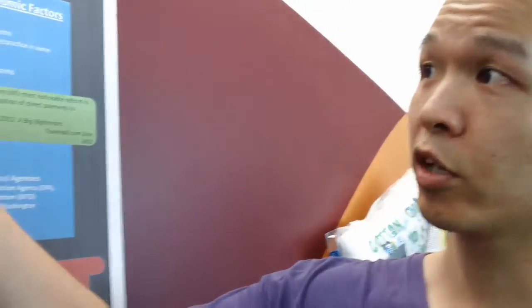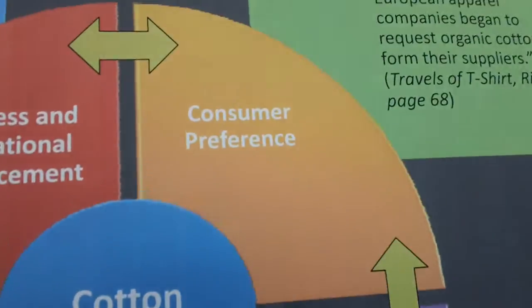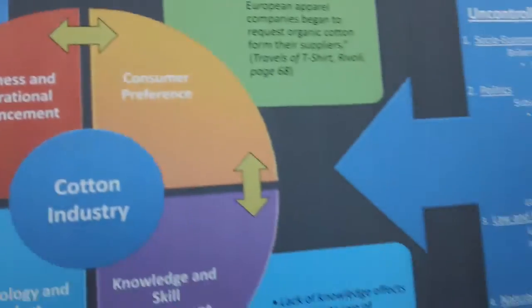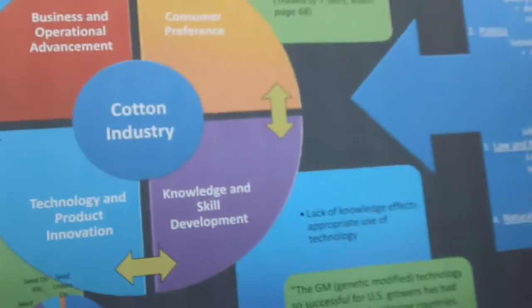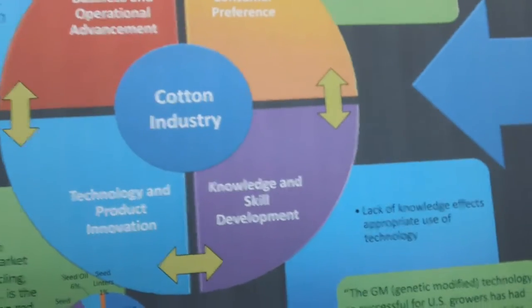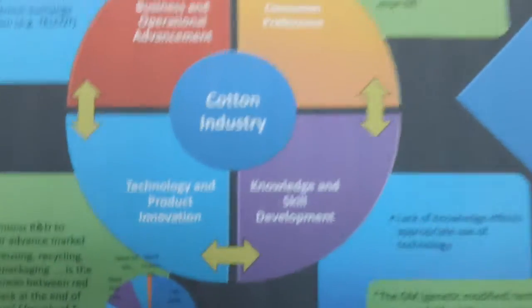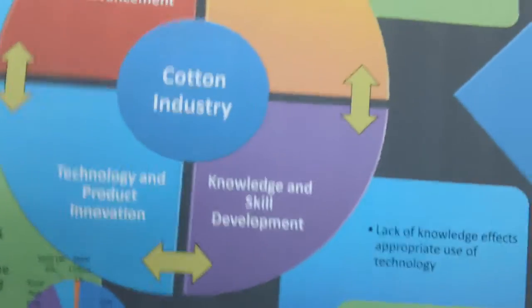We also talk about consumer preferences. Because consumer preferences change, industries have to be aware of what they want. The example in the book shows that more people are interested in organic cotton, so more organic cotton farms are showing up.